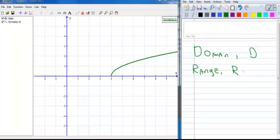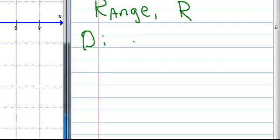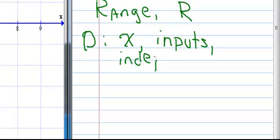So D for domain, that means all the things that X can be. So here's our X right here on our axes. And you can think of the domain. You can think of it as your X values. You can think of it as your inputs.